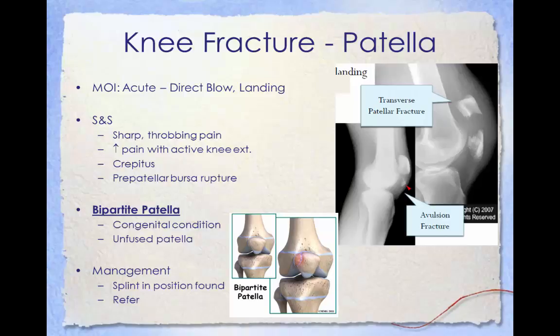Common signs and symptoms of patella fracture include sharp and throbbing pain, increased pain with active knee extension, crepitus or a crunching feeling, and pre-patellar bursa rupture is also possible. Managing a patella fracture should include splinting the patient in the position found and referral. Treatment options include non-surgical and surgical options depending on the type of fracture. An undisplaced fracture takes around four to six weeks of immobilization in a cylinder cast, while a displaced fracture requires surgical treatment followed by quadriceps strengthening exercises for complete rehabilitation.